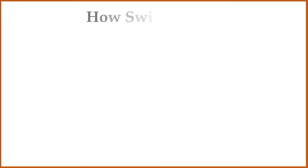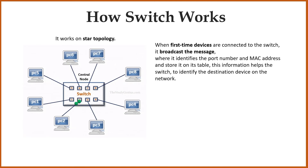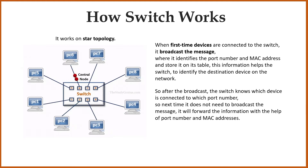Let's understand how the switch device works. It works on star topology because all the devices are connected to the central node. Data from the source device first arrives at the switch and then is transferred to the destination device. When devices are connected to the switch for the first time, it broadcasts the message to identify the port number and MAC address and stores them in its table. After the broadcast, the switch knows which device is connected to which port number, so next time it does not need to broadcast — it will forward the information using port numbers and MAC addresses.